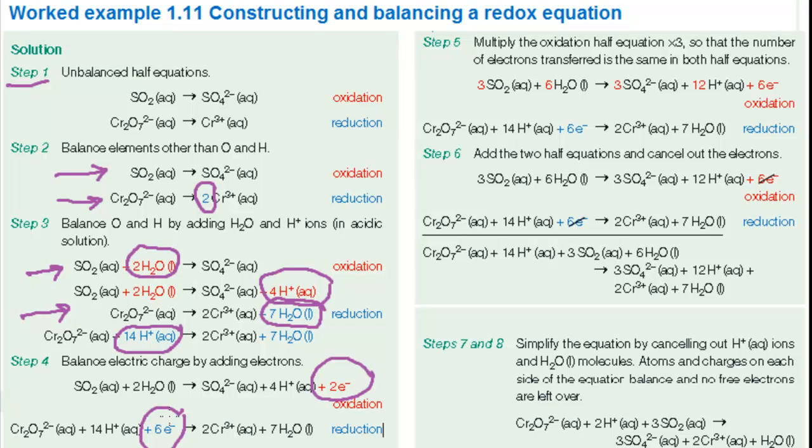Step five adjust the equation so that the same number of electrons are transferred in each case. Two electrons are released in the oxidation but six electrons are used in the reduction. So you need to multiply the oxidation reaction through by a factor of three so that six electrons are released.